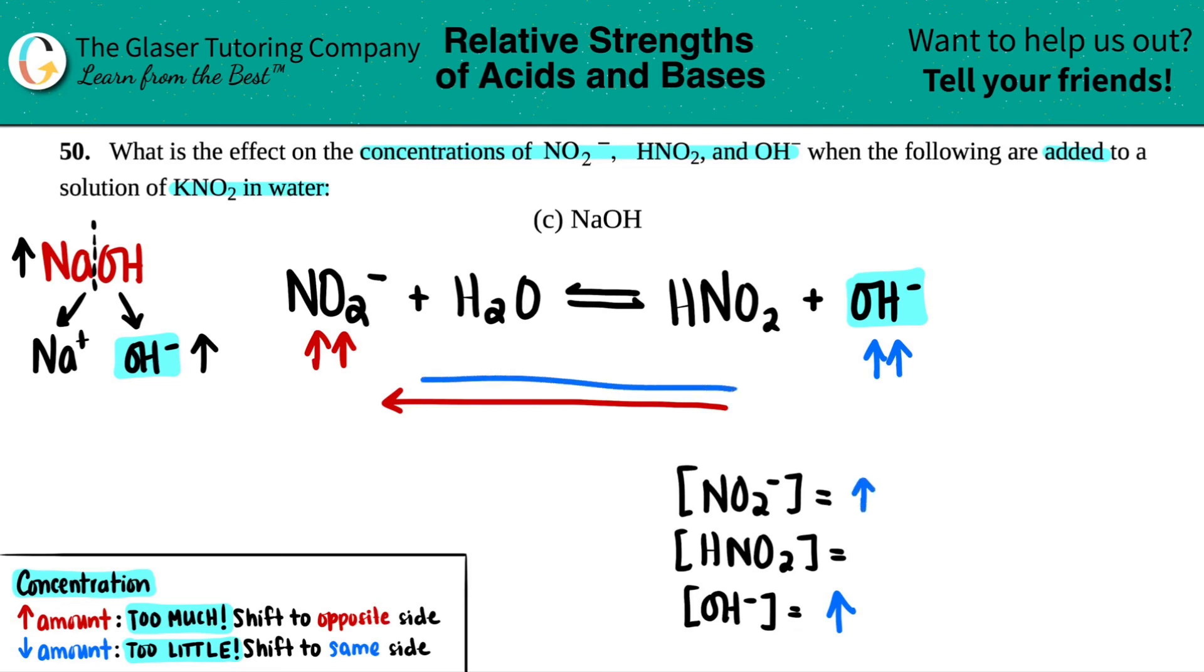And since we're going from right to left, the HNO2 would have to drop to counteract the increase in OH minus, and that would decrease.